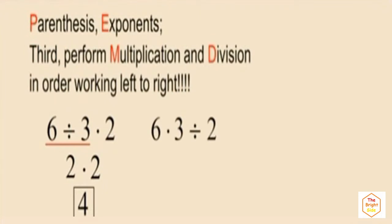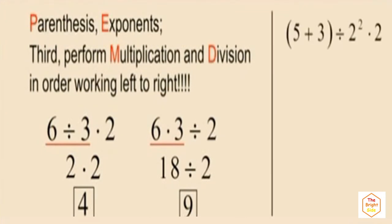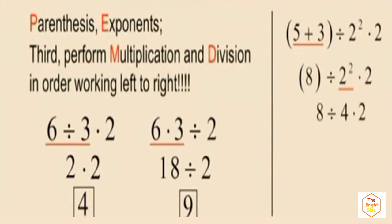Here we have multiplication and division where multiplication comes first working left to right — six times three is eighteen, and eighteen divided by two is nine. In the next problem we have parentheses, a division, an addition, and an exponent. Work parentheses first: five plus three is eight. Then evaluate the exponent: two squared is four. Now division comes first — eight divided by four is two — then two times two is four.